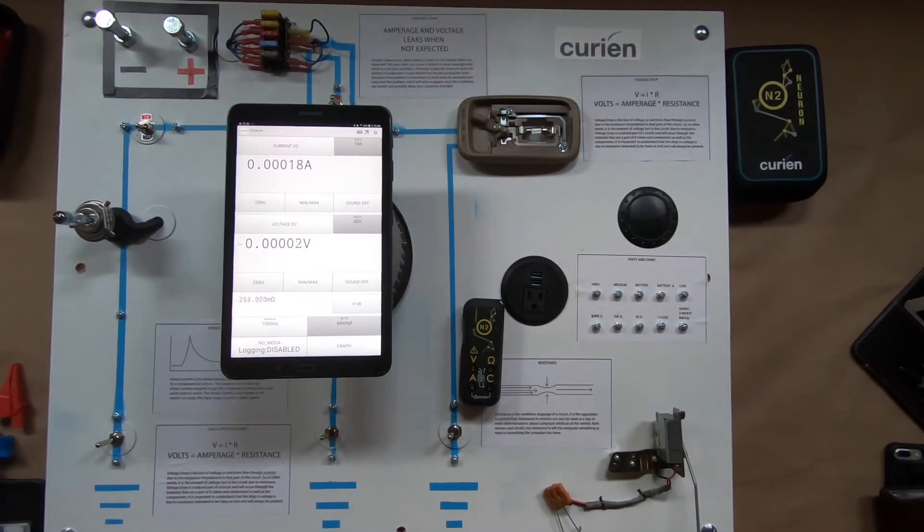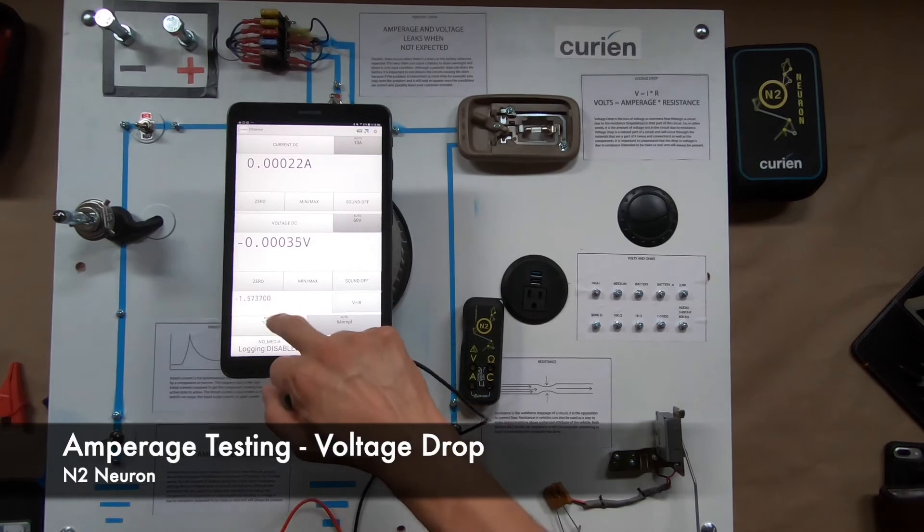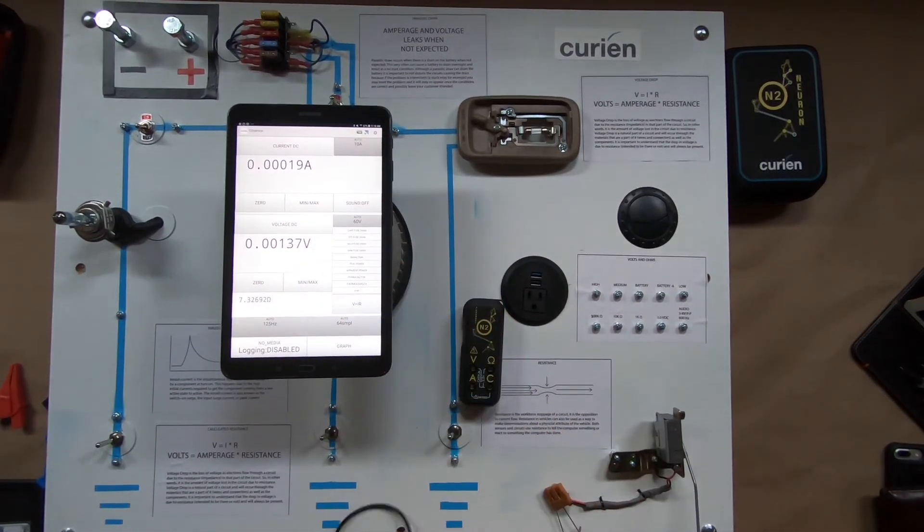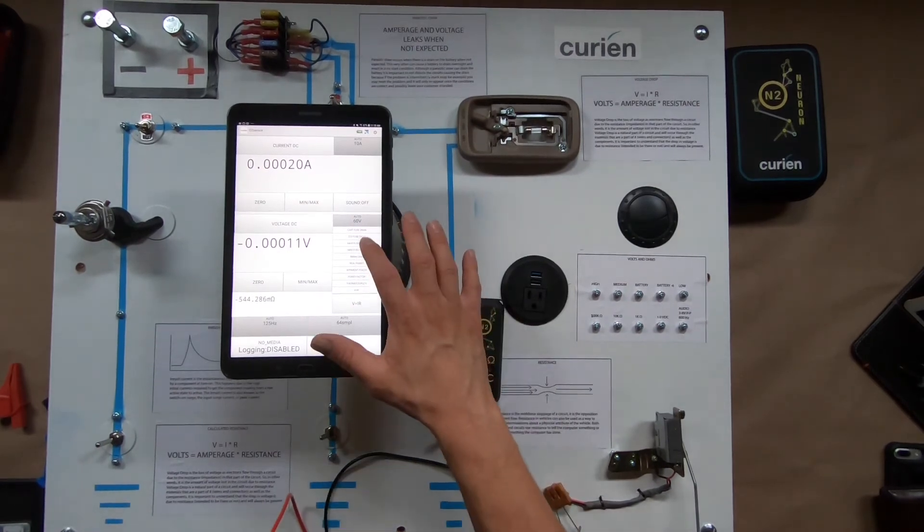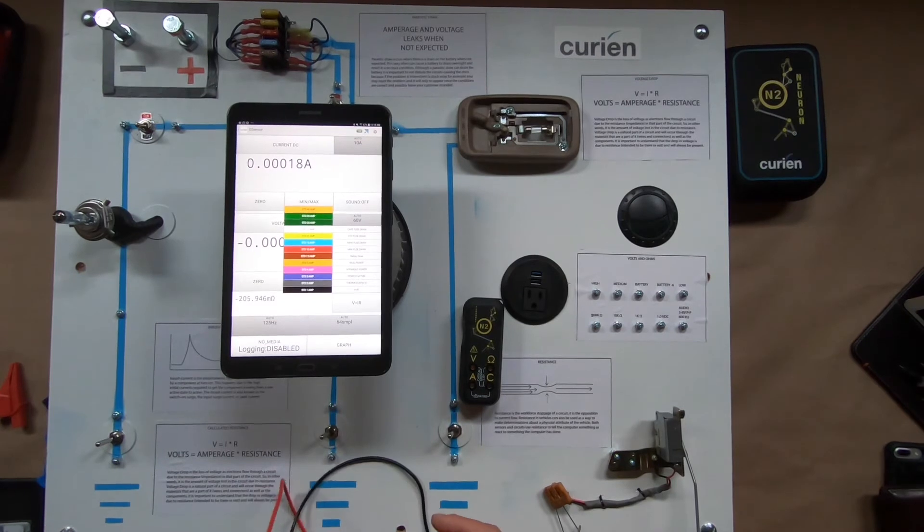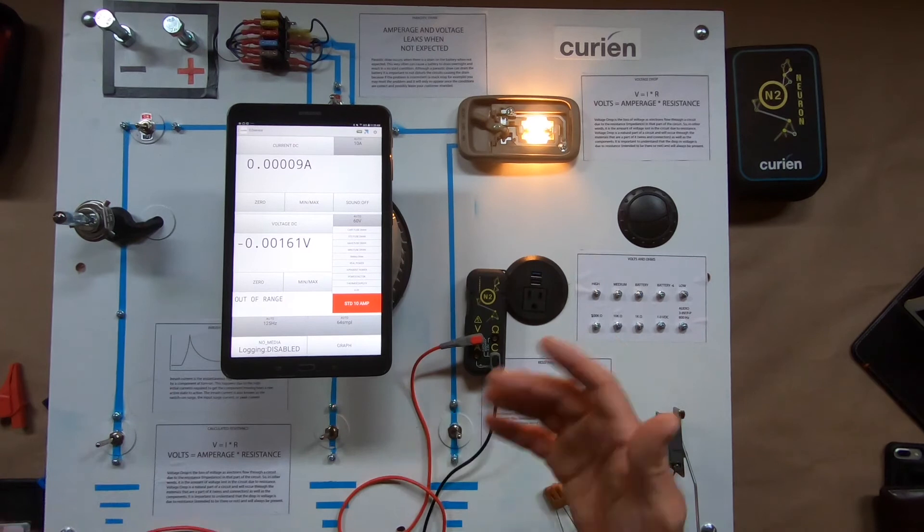Now one of the really awesome things about the N2 here, and we're going to turn everything back on to auto ranging, one of the really awesome things is we have the ability to input calculations for you and do math for you through the reading measurements.